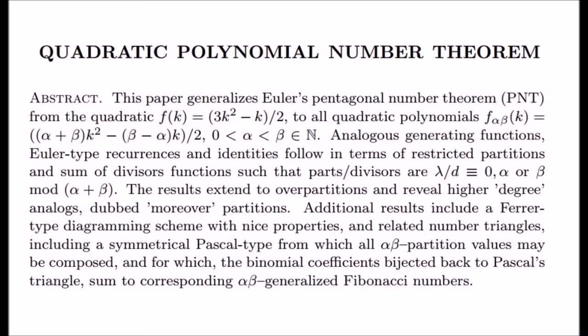Well, let's just see what it says here in this here paper. Up to now, we have covered that this quadratic of Euler's pentagonal number theorem can be replaced by this general quadratic F alpha beta of K in the theory of partitions and get analogous generating functions, Euler type recurrences and identities, and restricted partition functions and restricted sum of divisors functions all over these two parameters alpha beta, a complete generalization.